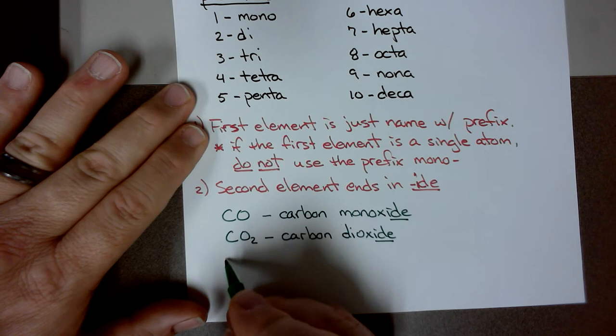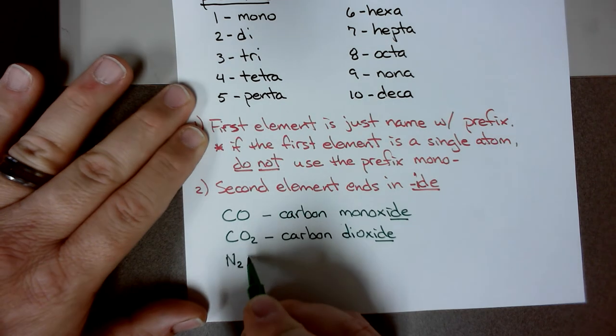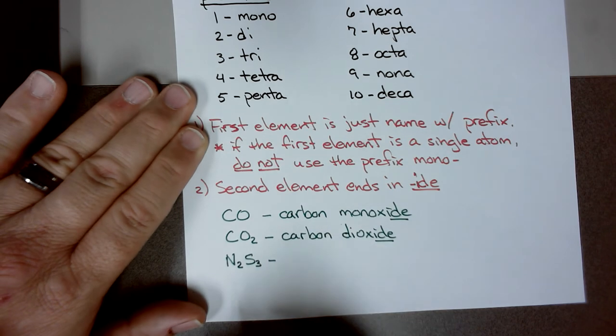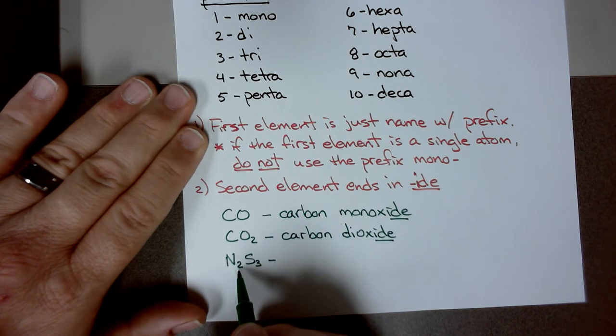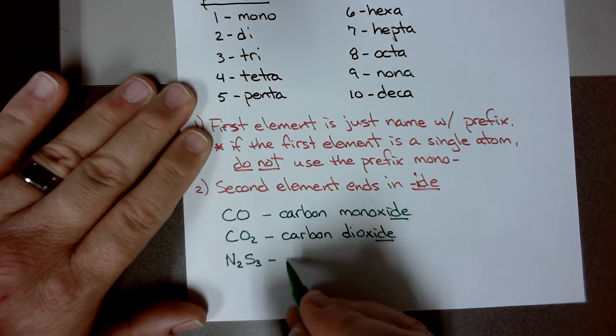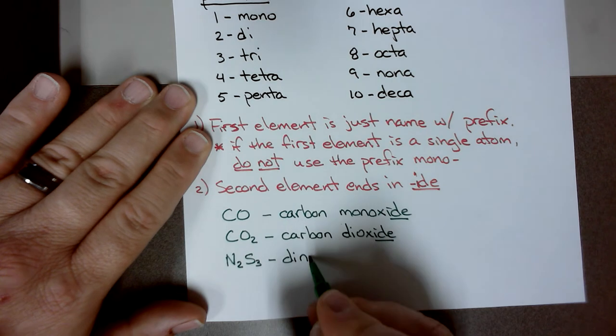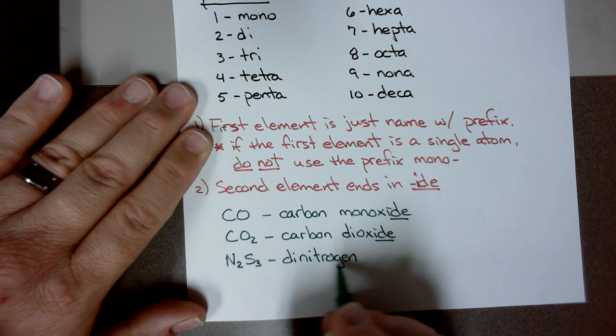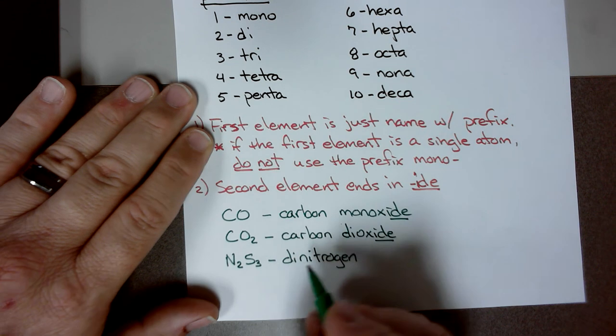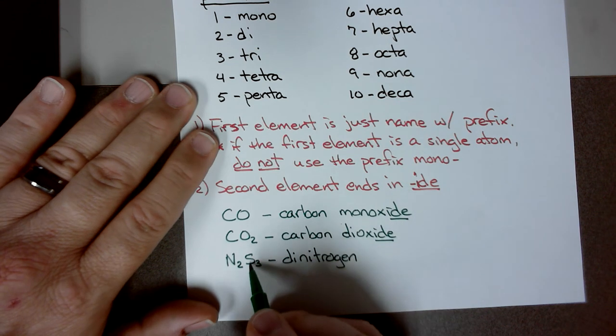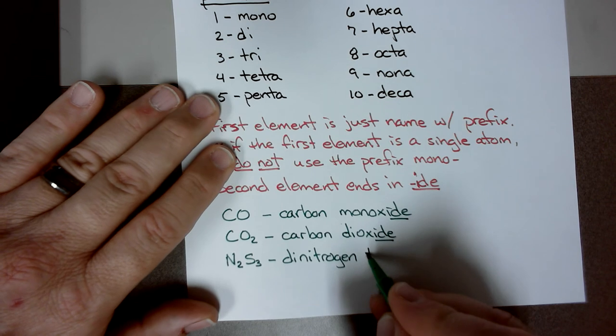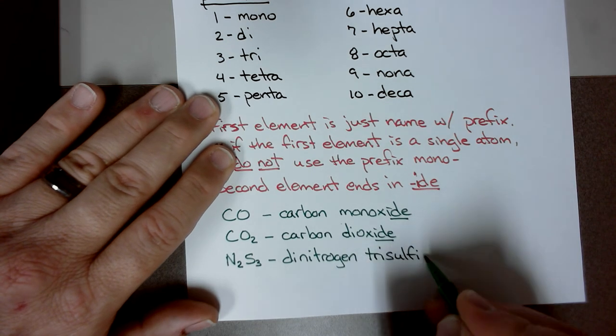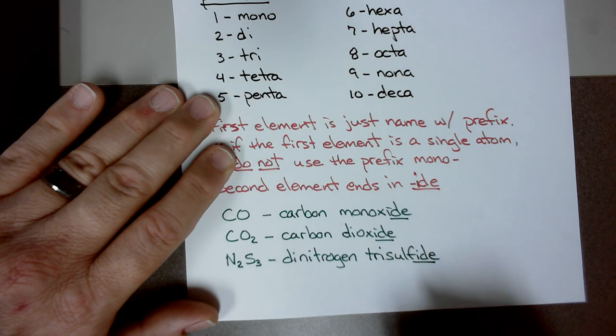What if we have something like N2S3? There's two, so that's dinitrogen. We use the regular name, and the prefix will tell you how many. And then trisulfide. Tri meaning three sulfurs, and then sulfide, you end in ide.